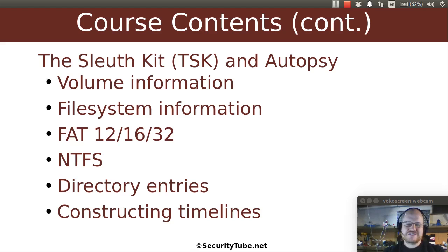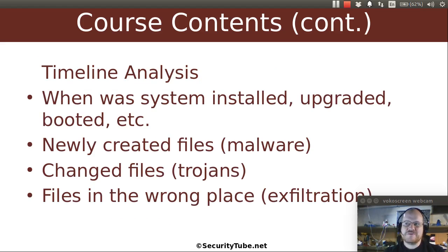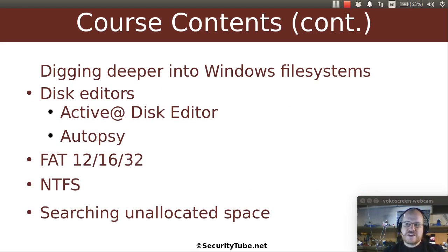How you can get volume information and file system information. We're going to dig deep into FAT file systems and NTFS file systems, directory entries, and show you how you can construct timelines. We'll spend a bit of time on timeline analysis so you can see things like when the system was installed, upgraded, or booted — are there any newly created files that might be related to malware, any changed files or Trojans installed, files in the wrong place, or attempts to exfiltrate data? We're going to show you everything you could ever want to know about FAT and NTFS so you can find even the more advanced attackers.